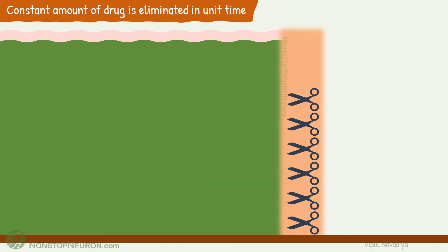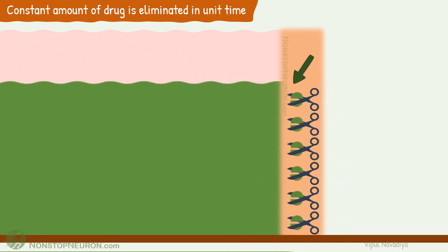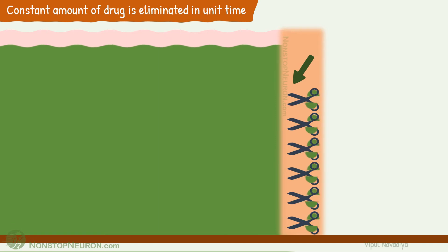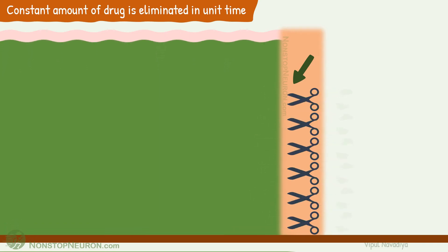You must have heard this: in zero-order kinetics, a constant amount of drug is eliminated in unit time. It means the same thing but with different words. Here, six drug molecules are being eliminated every minute. This amount remains constant even with changing plasma concentrations, as long as the drug is following zero-order kinetics. Thus, we can say a constant amount of drug is eliminated in unit time.